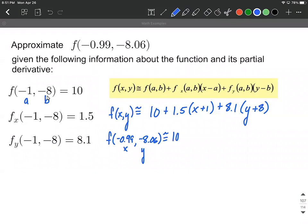So we can say that's going to be 10 plus 1.5 multiplied by negative 0.99 plus 1, plus 8.1 times negative 8.06 plus 8.